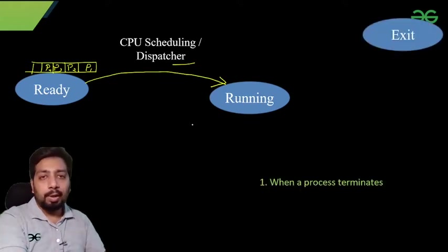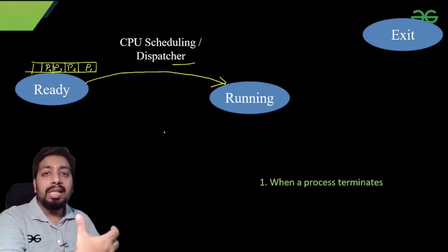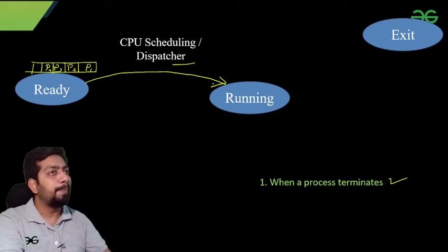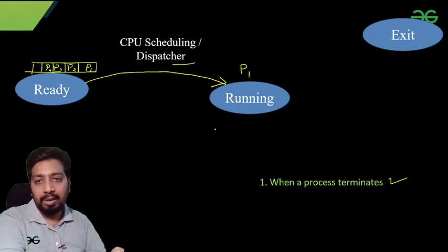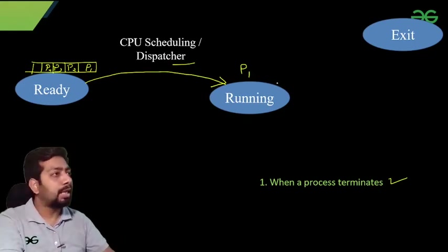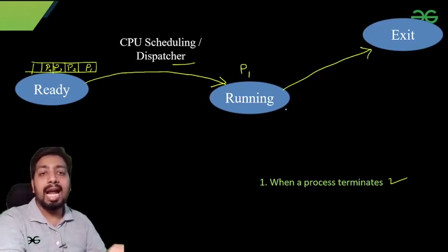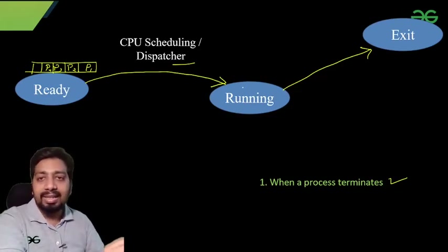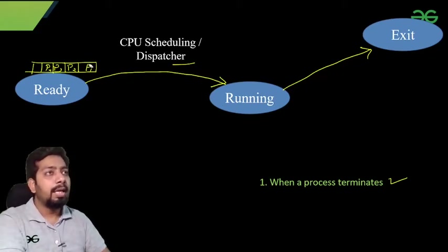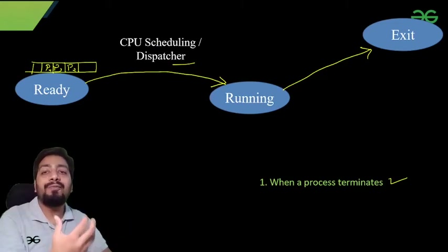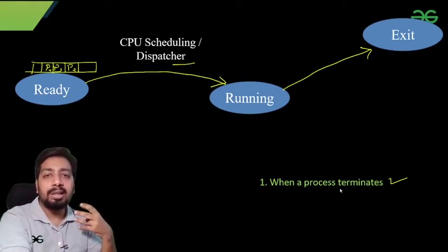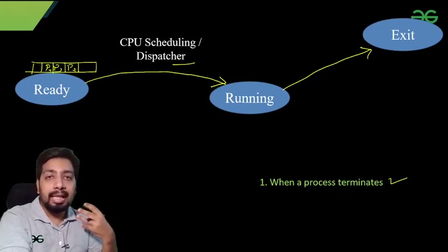Let me tell you when the operating system needs to run the CPU scheduling algorithm. The first case is when a process completes. Suppose P1 gets the CPU and completes its task; as soon as it goes to the exit state, the CPU is idle. A new process needs to get the CPU, and the CPU scheduling algorithm selects one process from the ready queue — from the remaining processes P2, P3, P4.